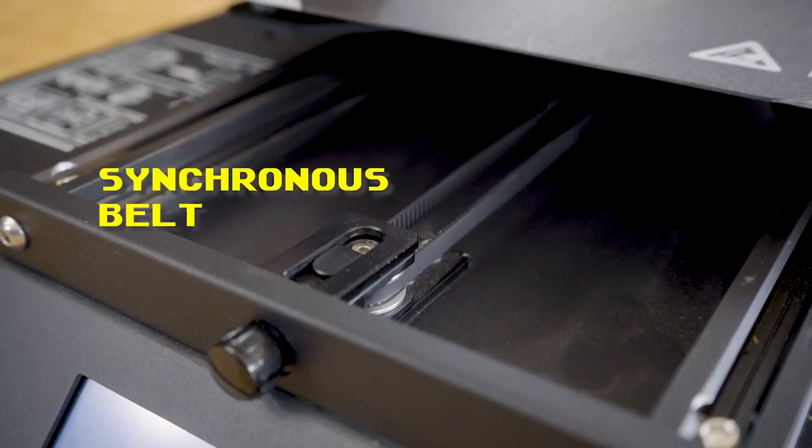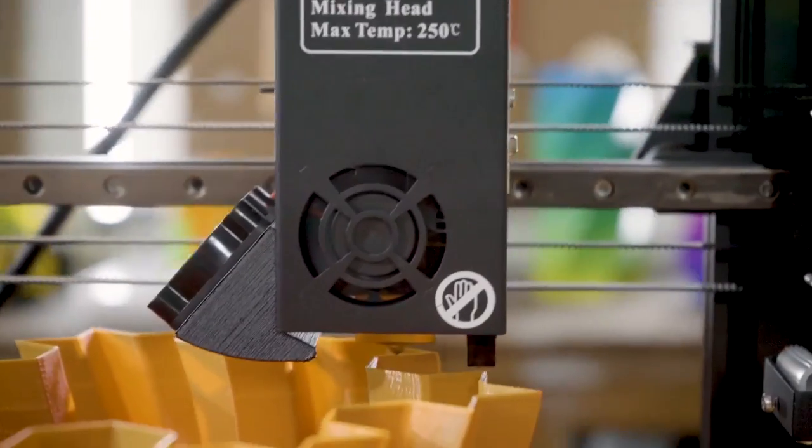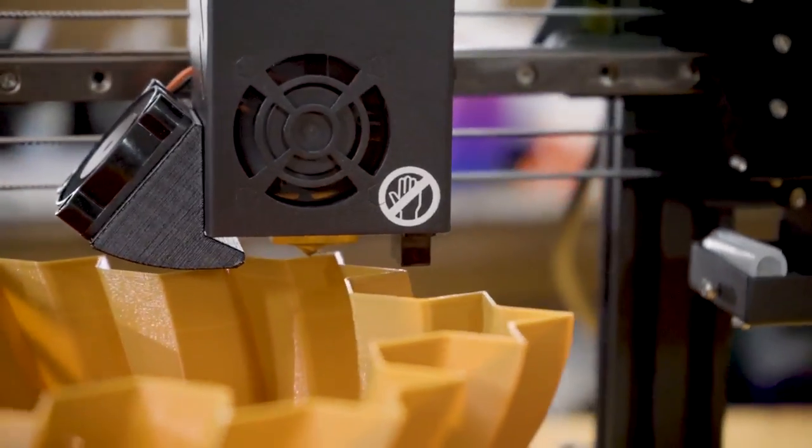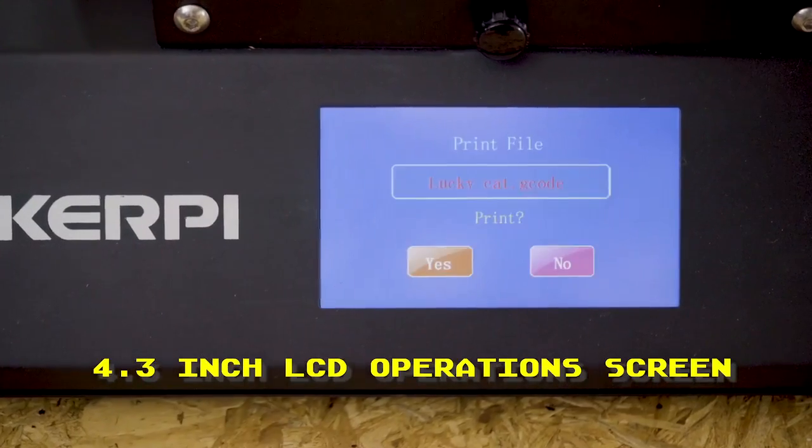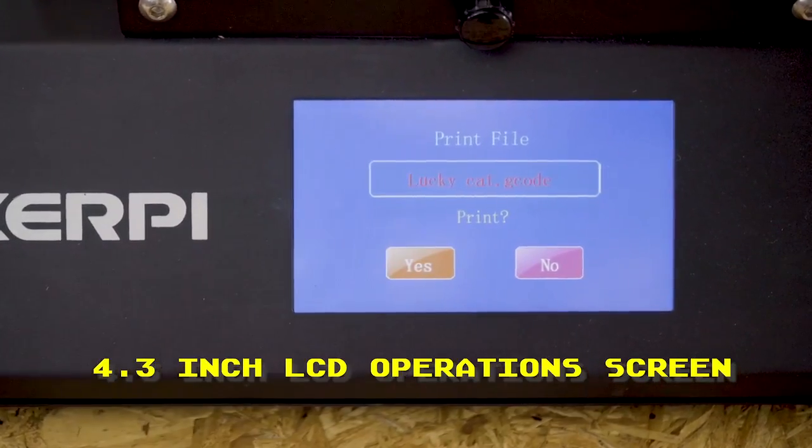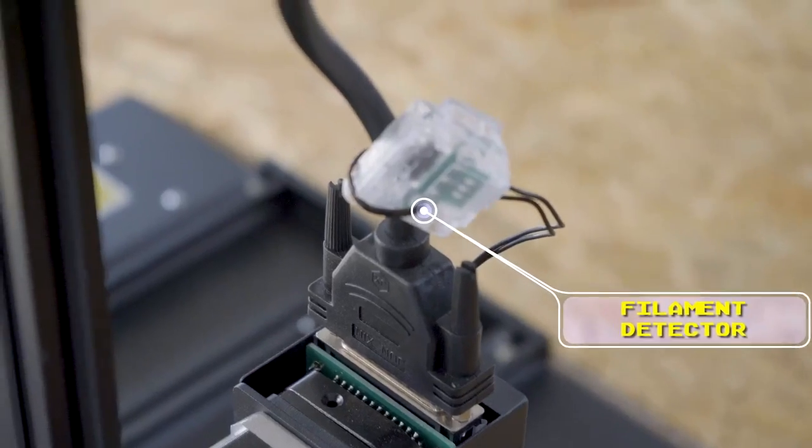It has an adjustable synchronous belt for stable printing and engraving performance, and a hardened steel extruder nozzle with temperatures up to 300 degrees. A bright 4.3-inch LCD touchscreen for easy operation, power outage print resume, and filament outage detection.